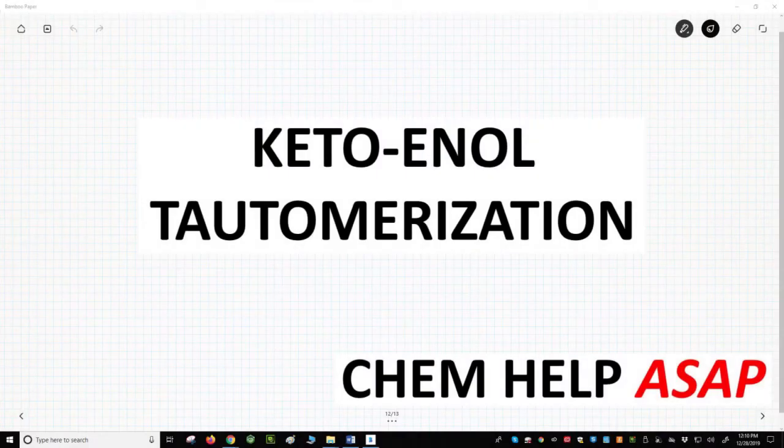Hello from Chem Help ASAP. Let's learn about the keto-enol tautomerization, which is an equilibrium that normally strongly favors the keto form over the enol form.